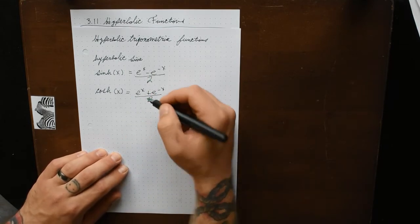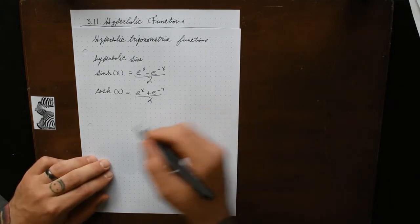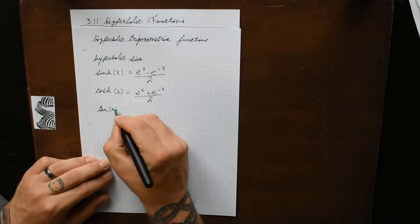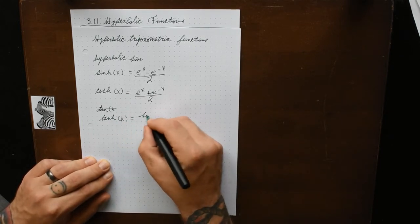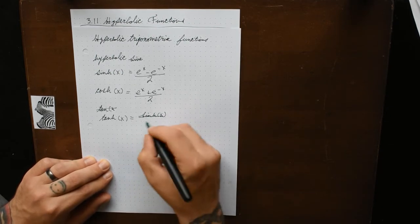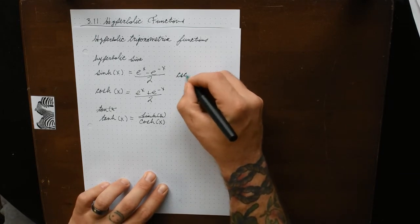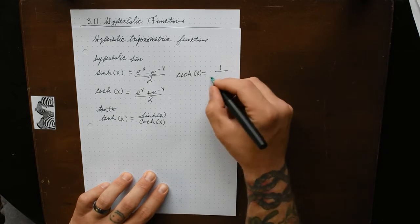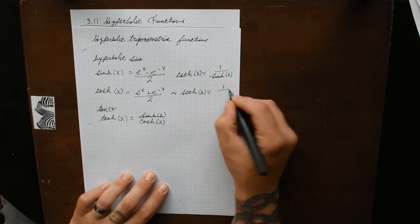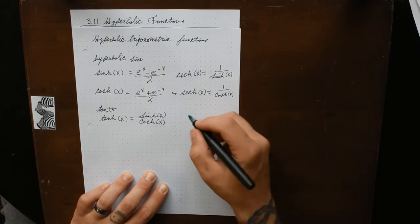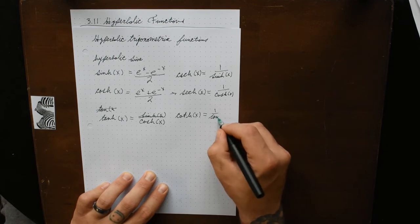They differ only in that sign. The rest of our hyperbolic trigonometric functions are defined in terms of sinh and cosh, just like the regular trig functions. So tanh(x) is equal to sinh(x) divided by cosh(x). The hyperbolic cosecant is equal to 1 over sinh(x), and the hyperbolic secant of x is equal to 1 over cosh(x).